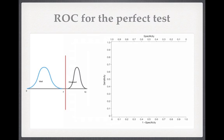Let's look at the ROC curve for the perfect test. With our cutoff set at seven — in the middle of those two distributions — sensitivity and specificity are both one. We plot sensitivity at one and one minus specificity at zero, giving us a point in the top left corner of the graph.